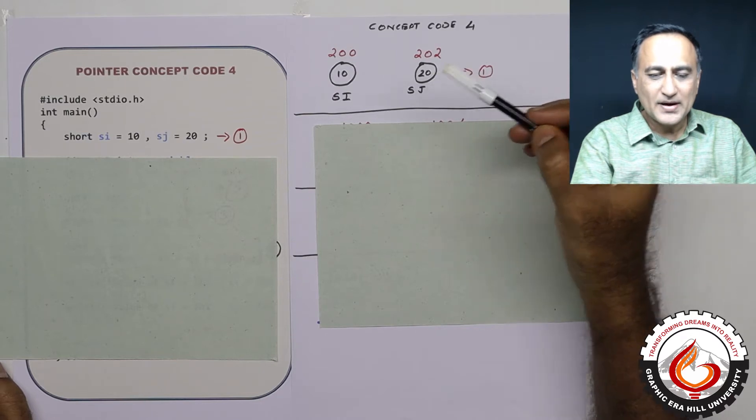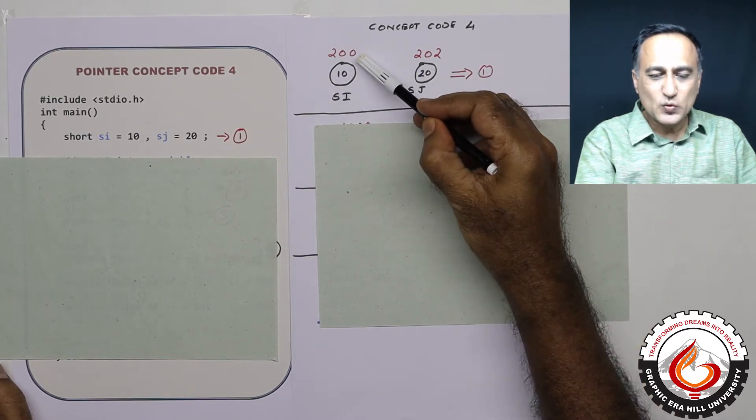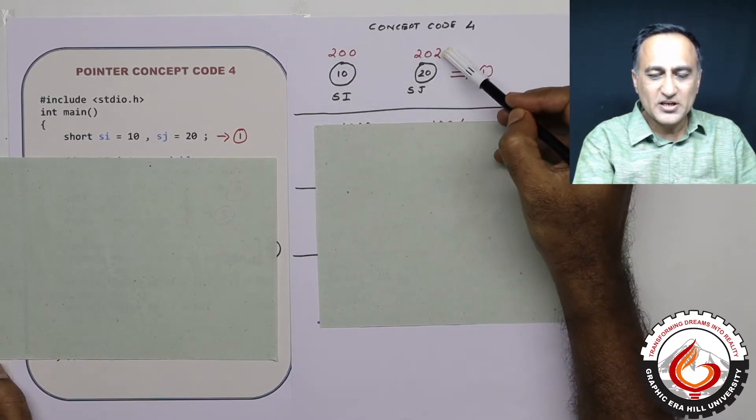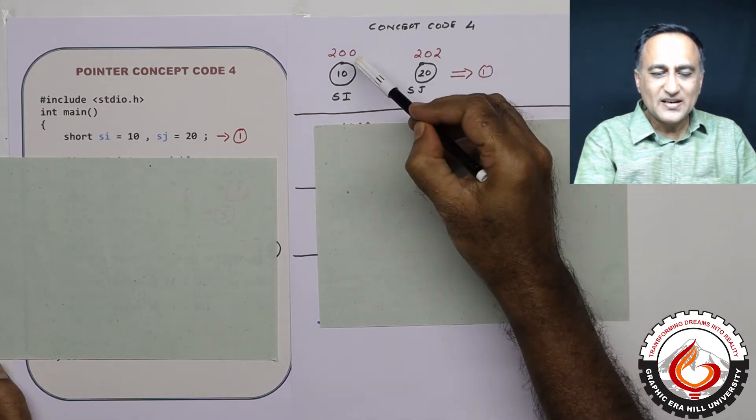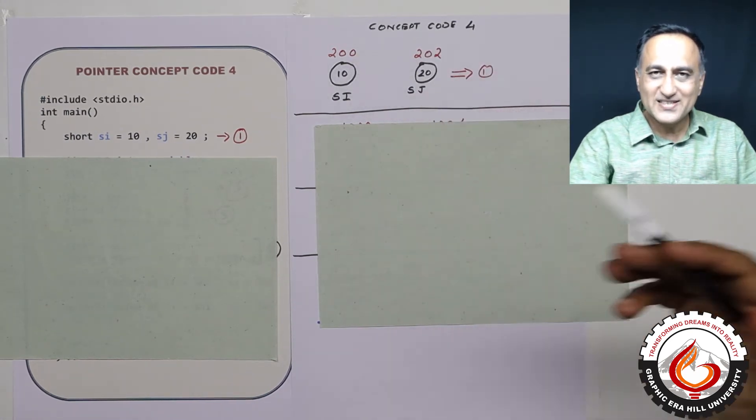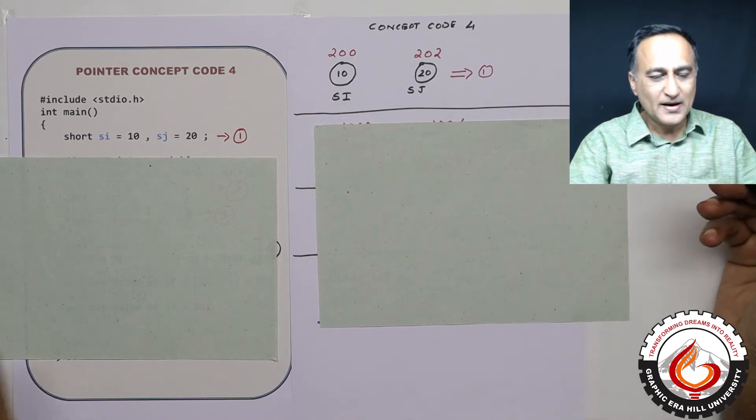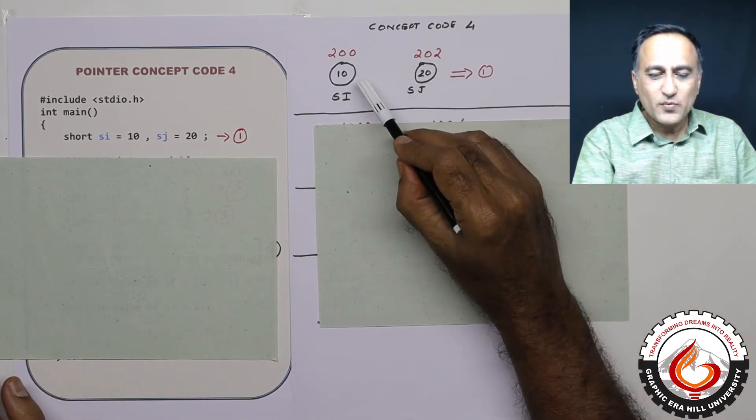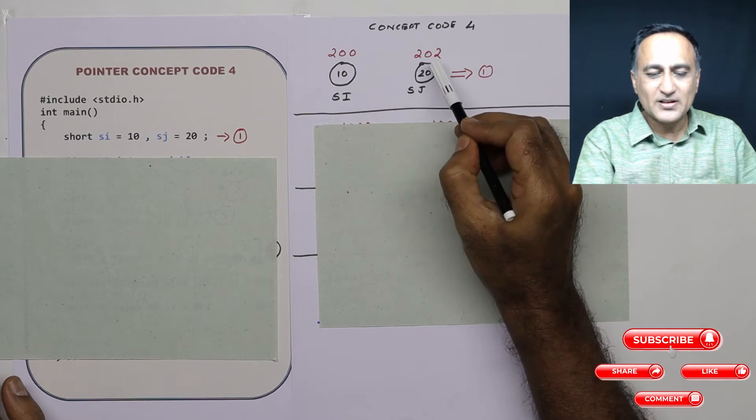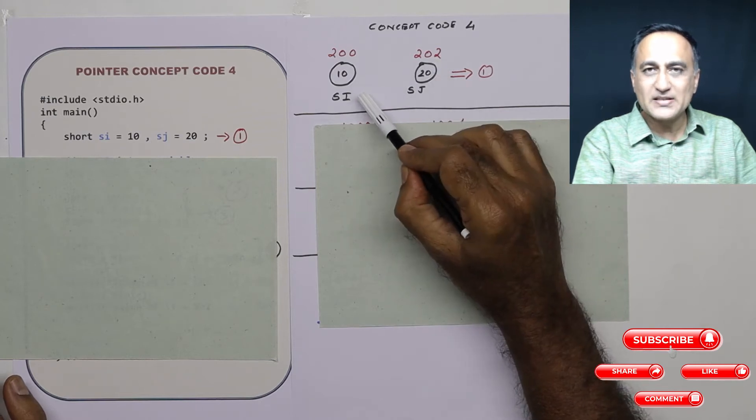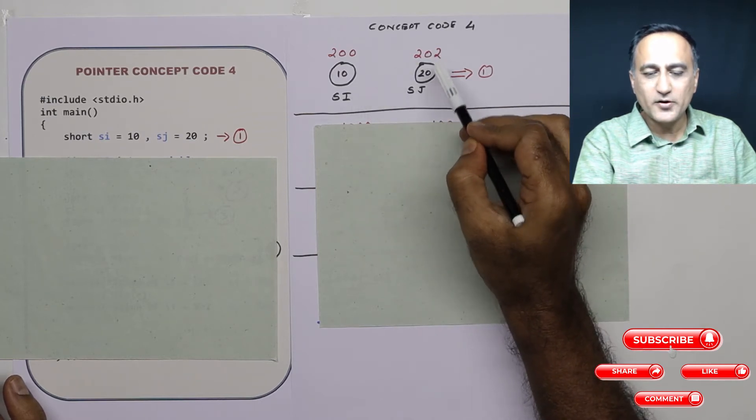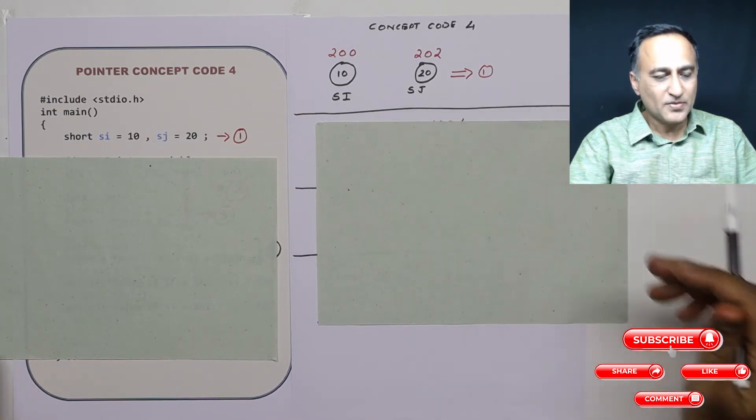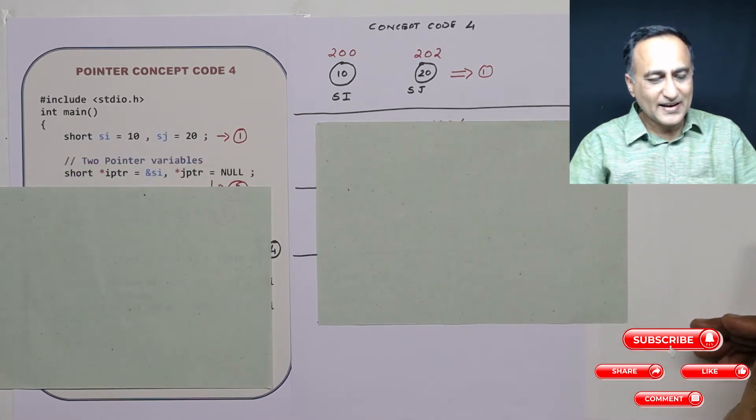Then I'm assuming address of si is 200, address of sj is 202. The reason this is at 200 is just a random number I have chosen. And generally variables are given space one after the other. Short int occupies two bytes so at 202 you will have the next short int sj. Now let's see what happens in the next step.